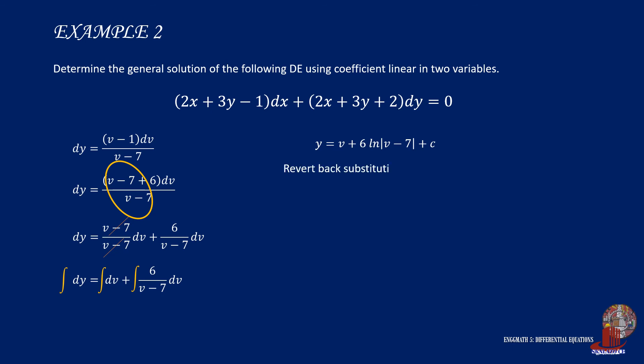Then revert back v as 2x plus 3y, which can be simplified as 2x plus 2y plus c is equal to negative 6 times the natural logarithm of 2x plus 3y minus 7. This is the general solution for the equation.